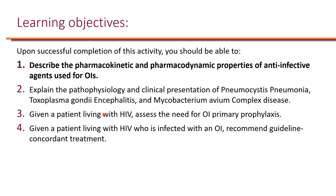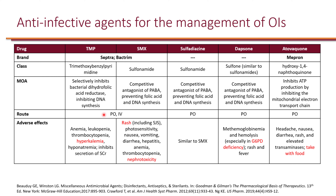The first learning objective is to describe the pharmacokinetic and pharmacodynamic properties of anti-infective agents used for opportunistic infections. Trimethoprim-Sulfamethoxazole combination — TMP-SMX — is by far the most commonly used agent, available under brand names Bactrim or Septra. It's available as PO and IV, though most commonly used as PO since the IV formulation has very limited stability.